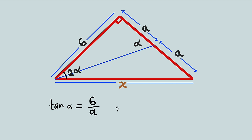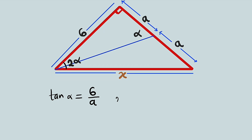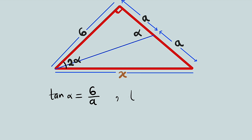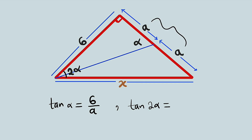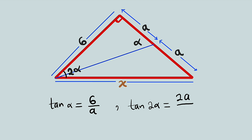Now let us take the tangent ratio of 2 alpha for the bigger right angle triangle. If we take tan(2 alpha), the opposite to that angle is the sum of two A's, making it 2A, divided by the adjacent, which is 6 — because this side is the hypotenuse. So tan(2 alpha) = 2A over 6.